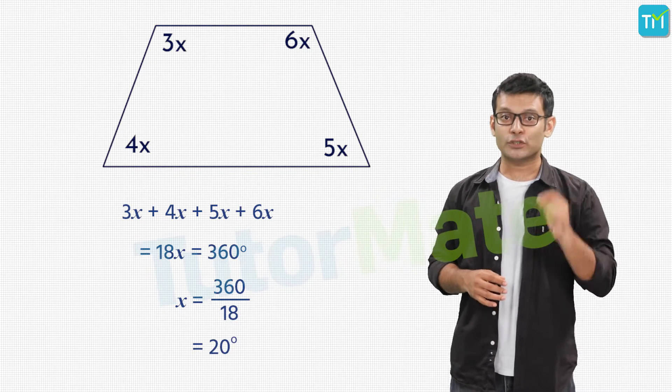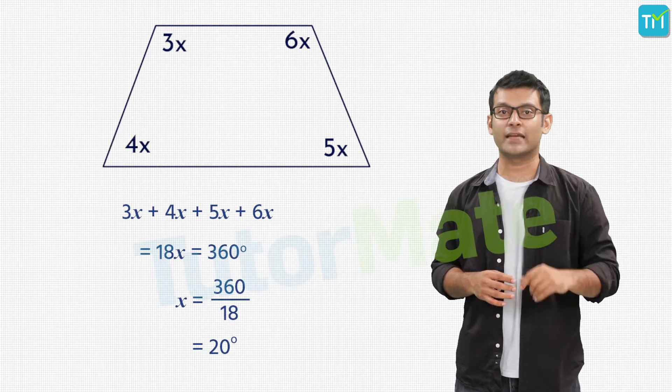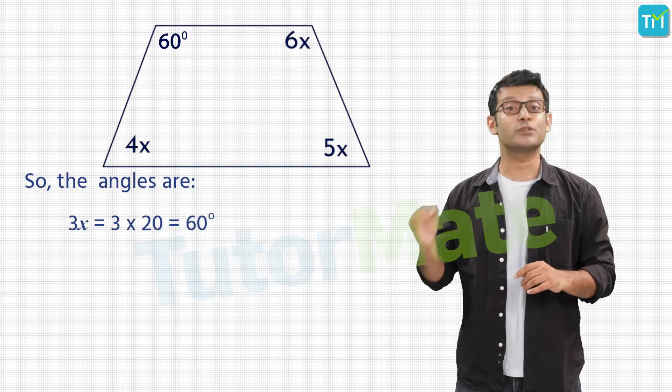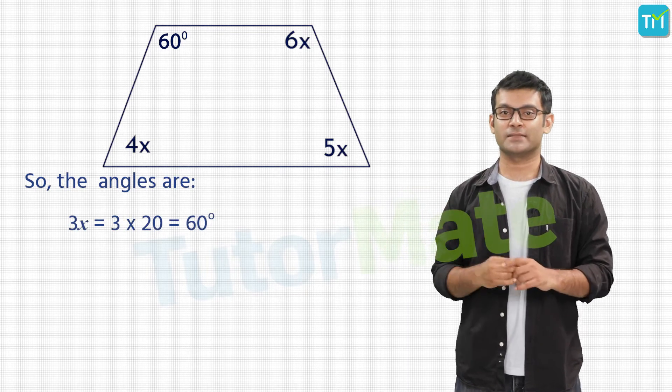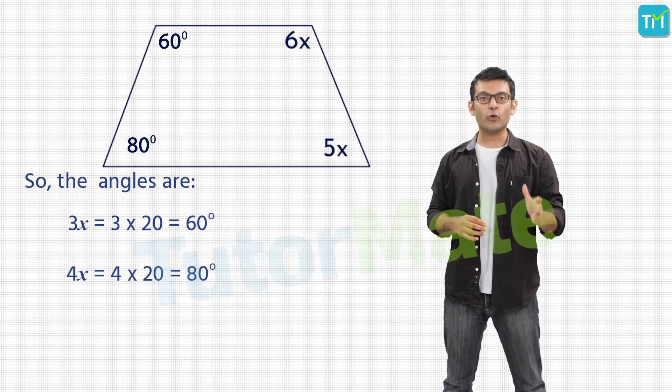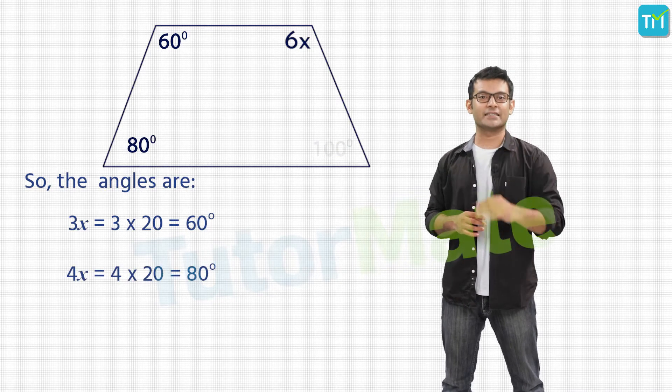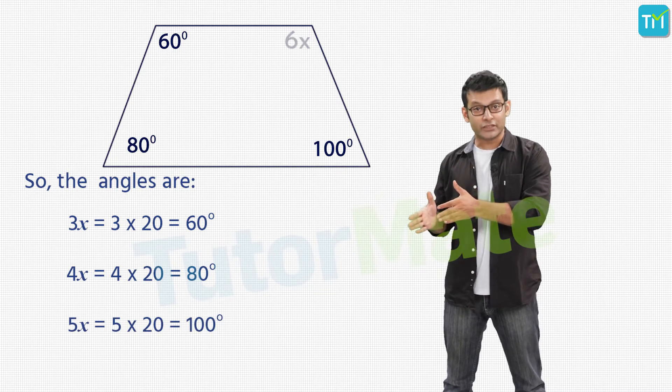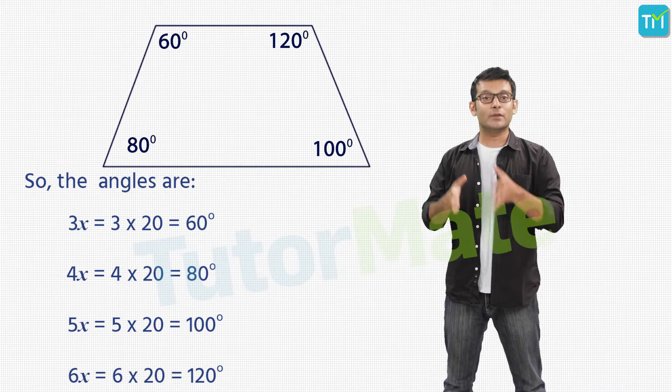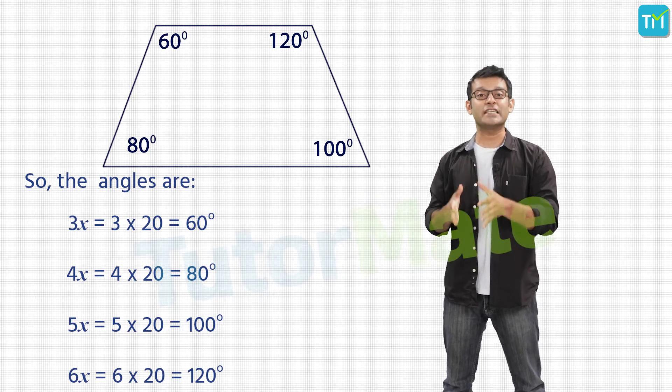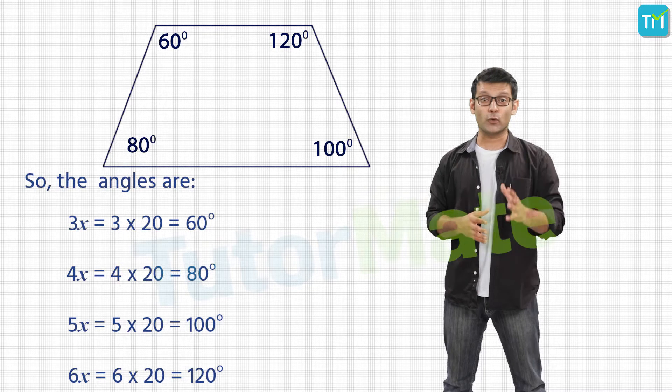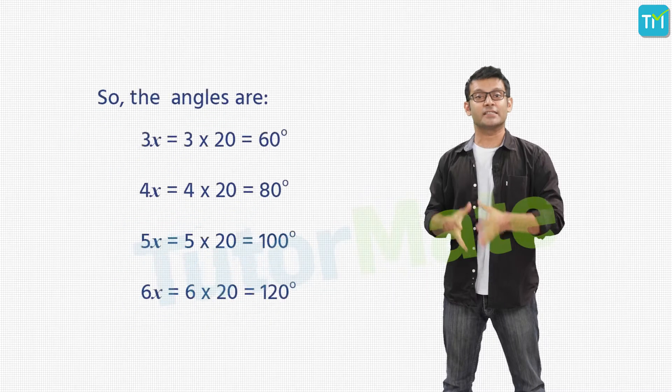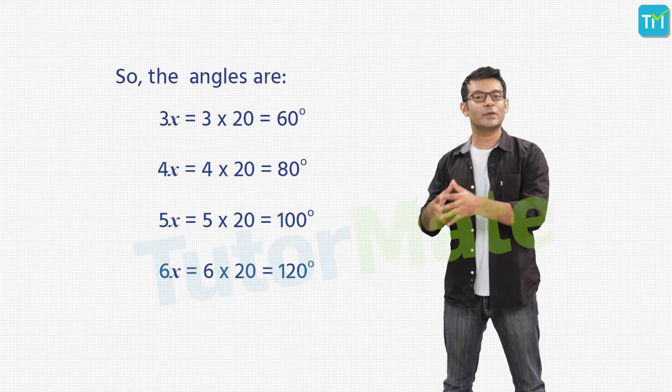Now, let us replace x with 20 in the expressions of the angles. We'll get the first angle, that is 3x, as 3 into 20 which is equal to 60 degrees. The second angle 4x will be 4 into 20 that is 80 degrees. Similarly, the third angle will be 5 into 20 that is 100 degrees and the fourth angle will be 6 into 20 which is equal to 120 degrees. And so, we have the four angles of the quadrilateral as 60 degrees, 80 degrees, 100 degrees and 120 degrees.